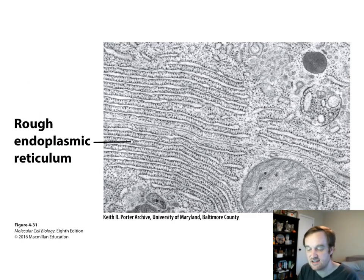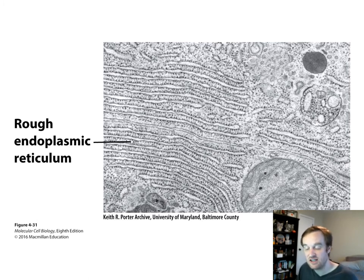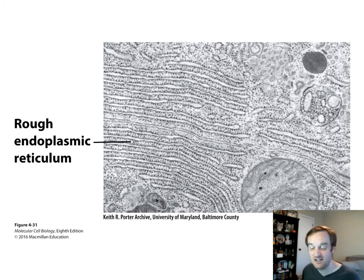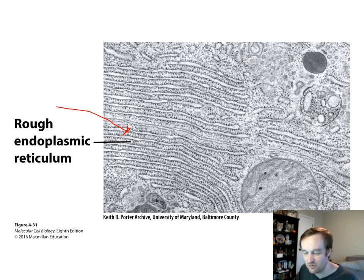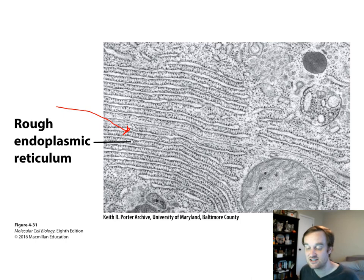TEM can also look at thin sections to examine the inside of cells. Because an electron beam has limited penetrating power, TEM samples are fixed, embedded in plastic, and cut to five to one hundred nanometer sections using a microtome. A section through a pancreatic cell stained with heavy metals shows the extensive rough endoplasmic reticulum, which in pancreatic cells is involved in the synthesis and secretion of digestive enzymes.